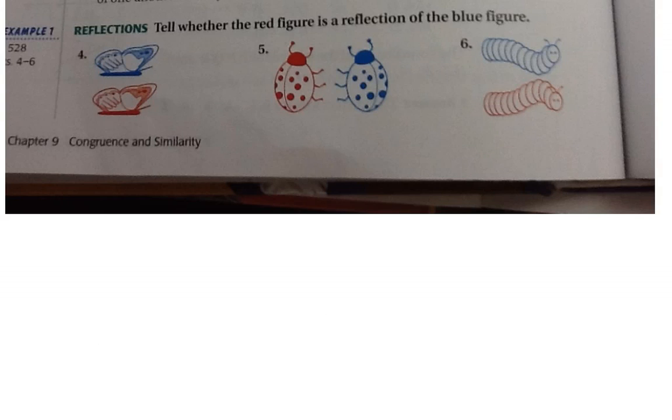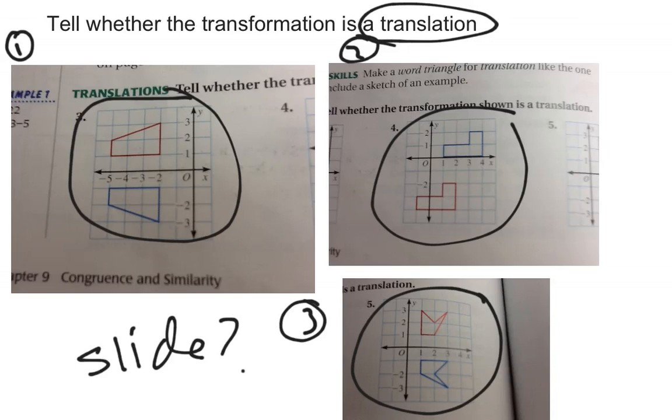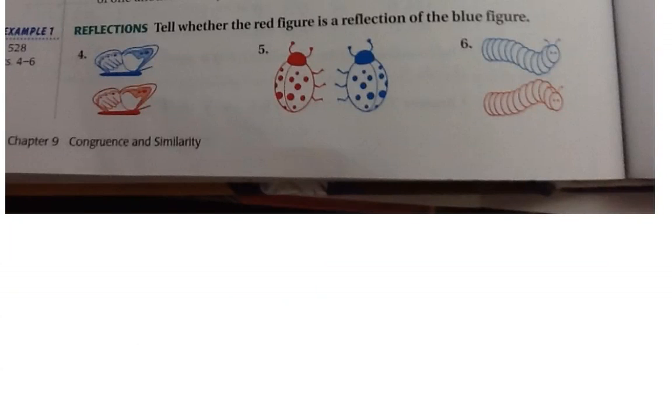And then the second three, so that was one, two, three. This is four, five, six, which are numbered already correctly. Tell whether the red figure is a reflection of the blue figure. So whether the red figure is a reflection or not.